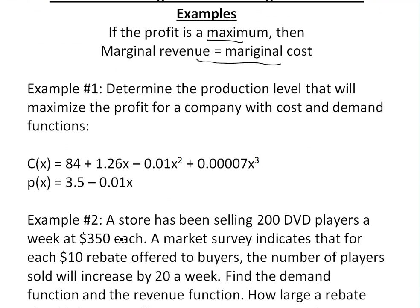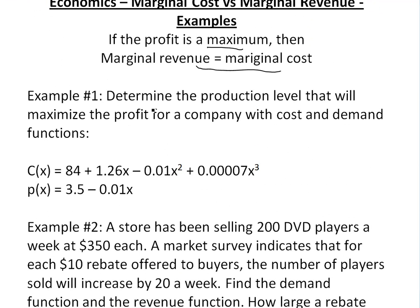We're going to look at these two examples. We'll do the second one if I have time, but we'll do this one first. Example one: determine the production level that will maximize the profit for a company with cost and demand functions. Remember this one is just the total cost to produce X items, and this one is basically dollars per item that you are charging.